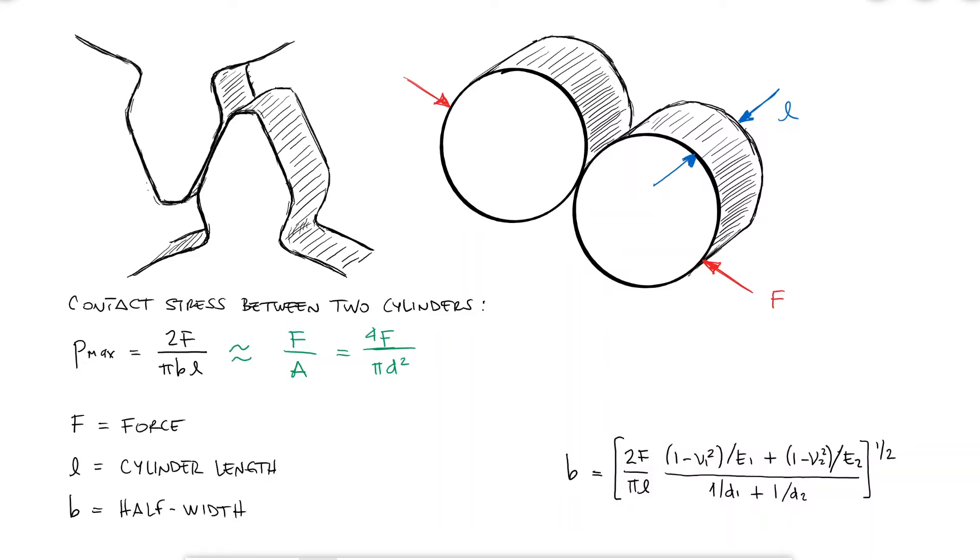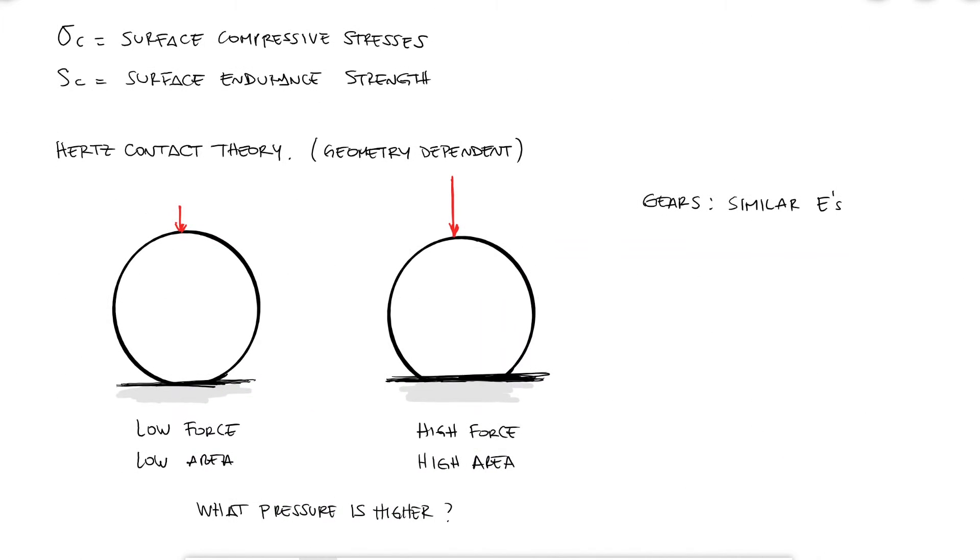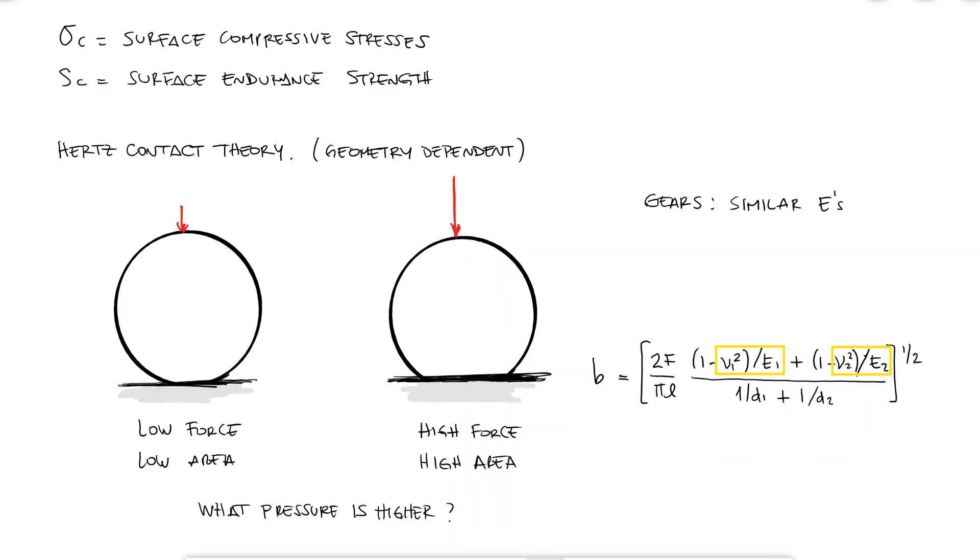If you think about the tire deforming on the road, and again, this is not the same case at all, but it can help you picture where that half width B comes from, you would see that depending on how soft or hard the tire and road are, and how much force is pushing the tire to the road, F, the value for B is gonna change. The force, of course, doesn't only affect the contact area through B, but it also affects the contact stress itself.